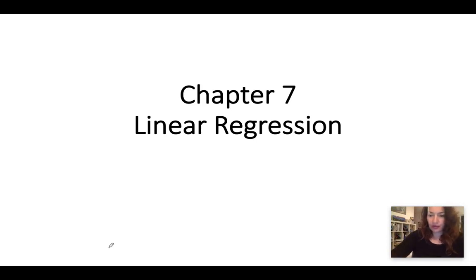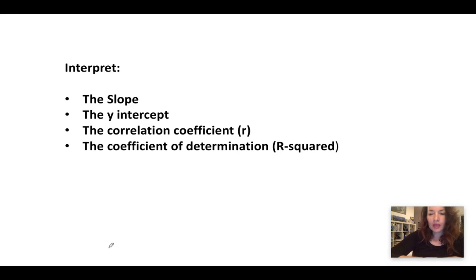Chapter 7, Linear Regression. I'm going to be talking about how to interpret the slope, the y-intercept, the correlation coefficient (also known as r), and the coefficient of determination (also known as r-squared).